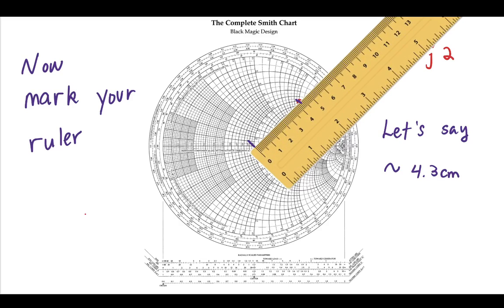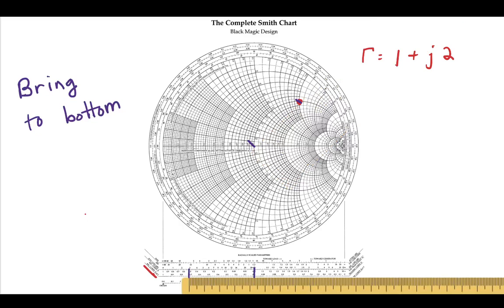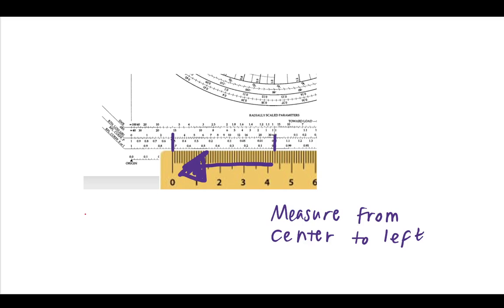And we're going to measure from the center to the left, that length that we just measured there. So you're going to bring your ruler down, keeping track of that distance. In our case, it's 4.3. You're going to keep track of that distance, bring it to the bottom of the page, and you're going to look at it closely, measuring from the center here to the left.